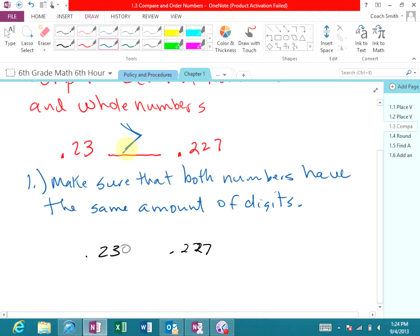230 is obviously bigger than 227. That's why in our original problem you would put the greater than sign in the blank, because 0.23 is greater than 0.227. The other thing I want you to look at is remember this is 23 cents. This is 22 cents or 22 and a half cents. Obviously 23 cents is more than 22 and a half cents.